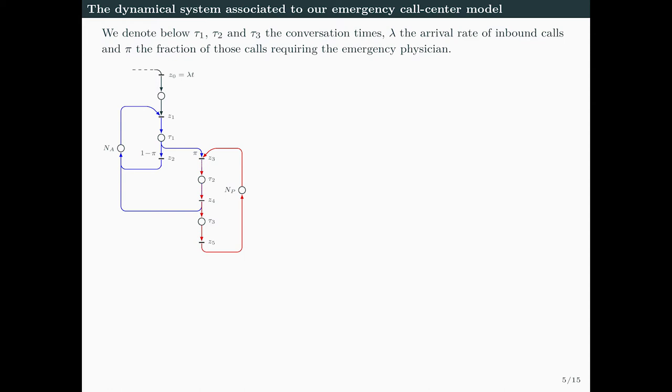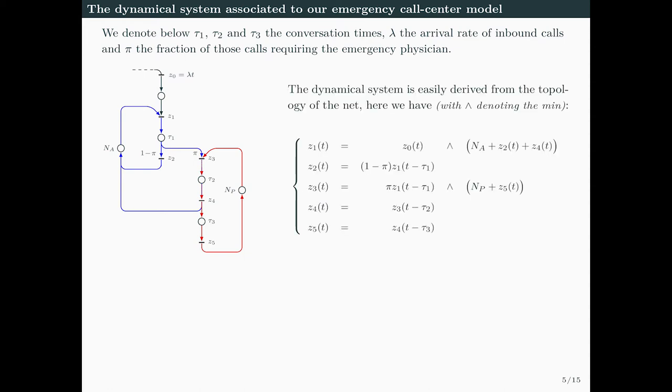Let's go back to our example and see how it works. I'm denoting by τ1, τ2, and τ3 the conversation times, by λ the arrival rate of inbound calls, and by π the fraction of calls requiring the emergency physician. It's not difficult to obtain the dynamics equations from the topology. For example, Z5(T) = Z4(T-τ3) means transition Z5 fires as many tokens as Z4, τ3 units of time before, which is normal because there's a place with holding time τ3 in between. The first equation tells you that Z1, the number of calls picked up by MRAs, is the minimum of the number of arrived calls and the accumulated number of MRAs available.